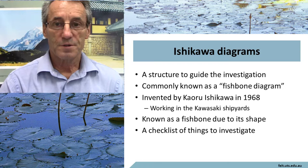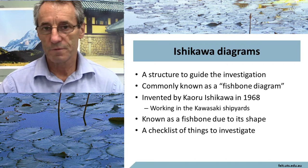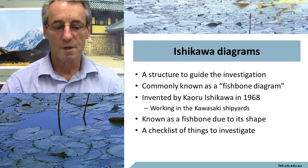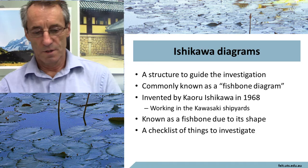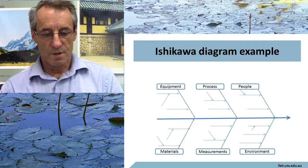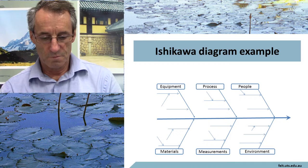It sort of is like a checklist. There are lots of checklists available depending on the different circumstances. The one that's probably appropriate to information technology incidents is the one that starts off with investigating people, process, equipment, materials, measurements, and environment.